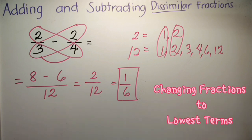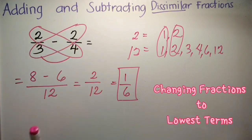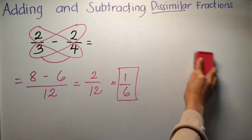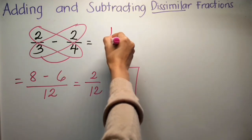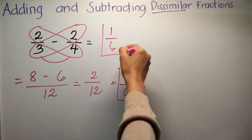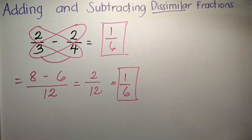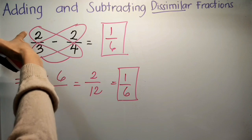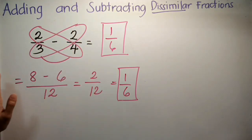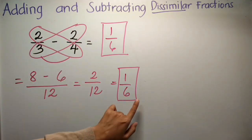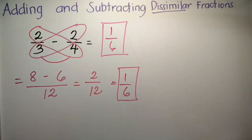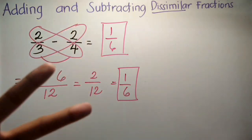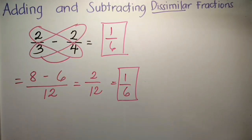Kids, ibig sabihin 2 thirds minus 2 fourths, ang sagot dyan ay 1/6. Now, step 1, step 2, step 3, tsaka mo siya gagawin — copy mo lang yung denominator. At kapag nasa highest term pa siya, gagawin mo lang lowest term. Kapag improper fraction siya, gagawin mo lang na mixed number.